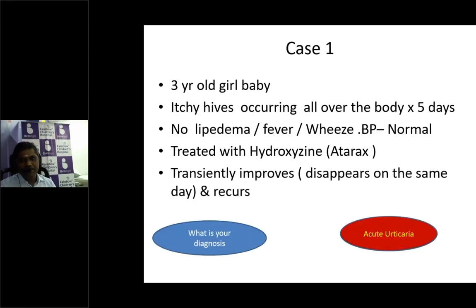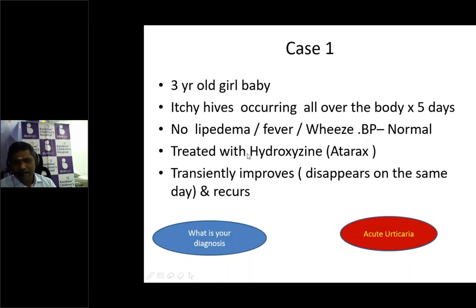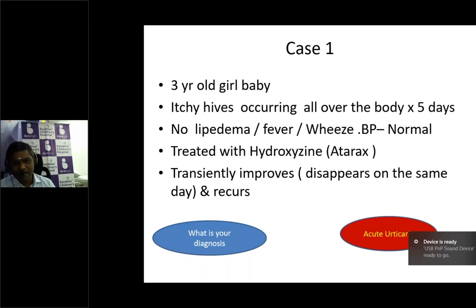Let's start with a case. We have a three-year-old girl brought with concerns of itchy hives involving all over the body for five days duration. There was no history of angioedema, no fever. Clinically the child was otherwise fine, vitals normal. The treating pediatrician started hydroxyzine with a prompt but transient response. The child started getting rashes again and again, hence was referred.